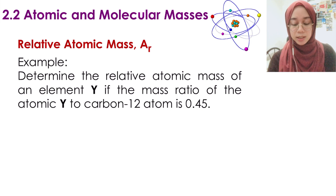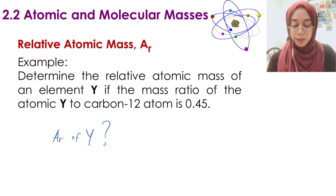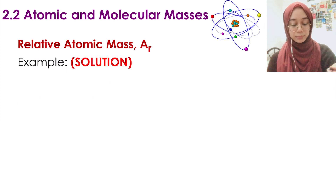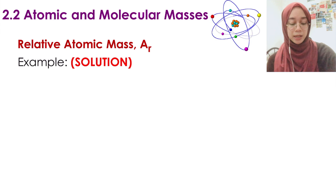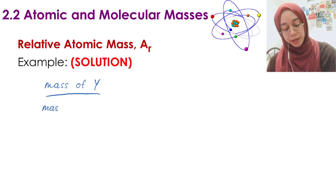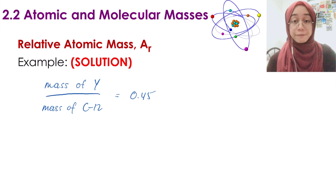In terms of the formula, Ar equals the mass of one atom of an element divided by one-twelfth of the mass of one atom of carbon-12, both in AMU units. Since both numerator and denominator are in AMU, the units cancel out. Therefore, relative atomic mass has no unit. As long as you see the word 'relative,' it means there is no unit.